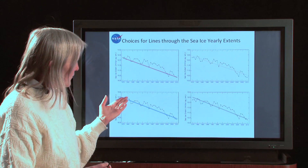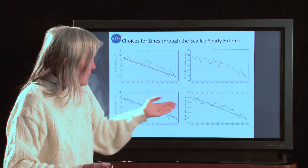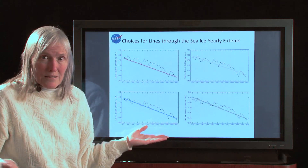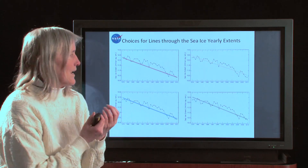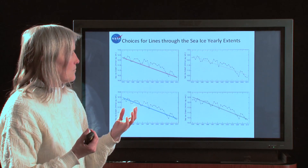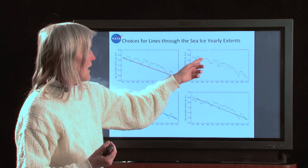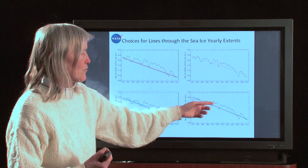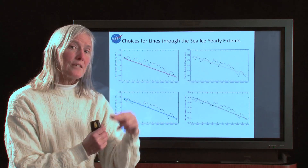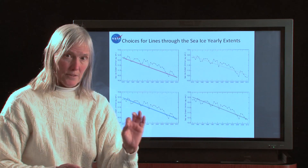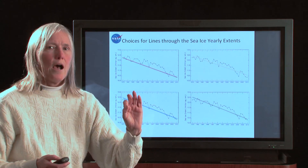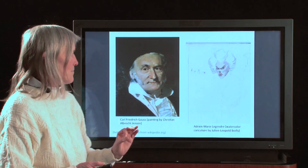But then if you try some other lines — all these other three are different lines and they go through the data. Scientists don't want one person to pick one line and another person to pick a different line. We want to have a line that everybody's going to agree is the best line, or at least that everybody can obtain the same answer from.